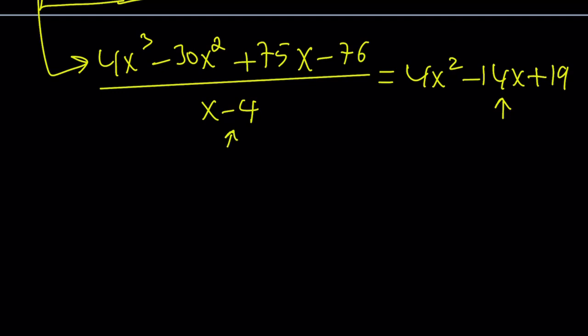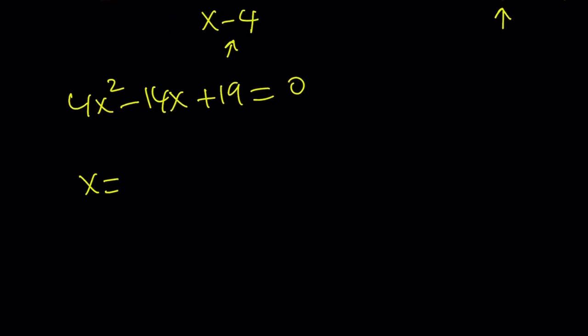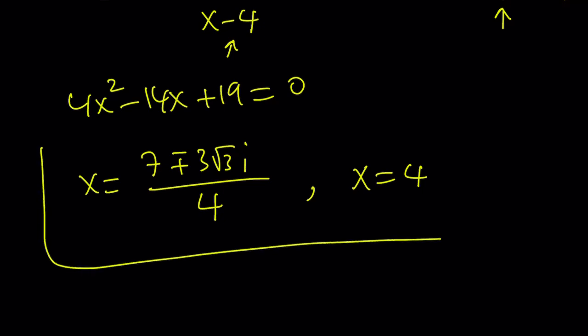We got two factors and we already know x equals 4 is a solution. Let's set this equation equal to 0 and find the roots. The roots are going to be x equals 7 plus minus 3 root 3i divided by 4. We don't get any real solutions from here because the discriminant is less than 0. We only get one real solution and that is x equals 4.